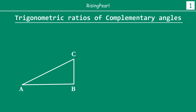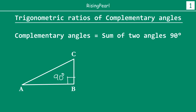Now whenever we talk about trigonometric ratios it's always about an angle, and it's always about an angle in a right triangle. So here we have drawn a right triangle ABC such that angle B is 90 degrees. Now what do we mean by complementary angles? We have learned in our earlier classes that the definition of complementary angles is if the sum of two angles is 90 degrees, then we call those two angles complementary angles.